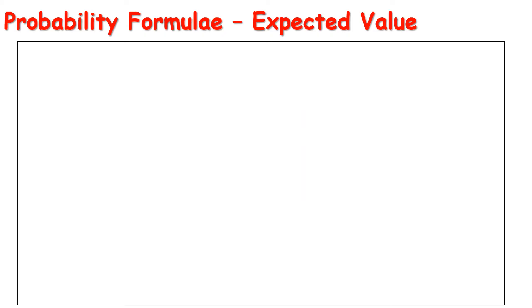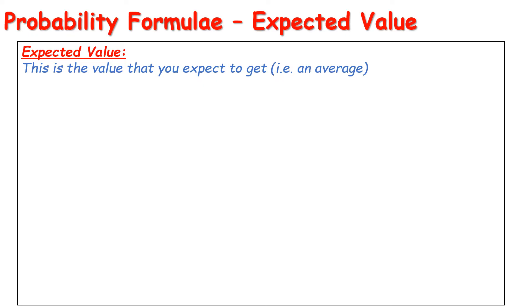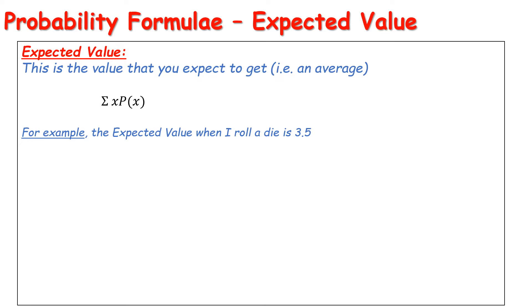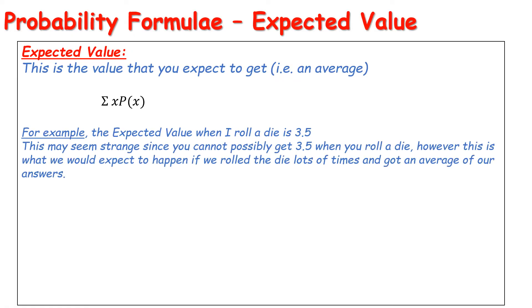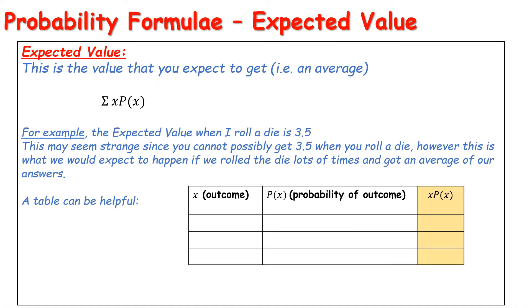Let's talk about expected value. Expected value is the value you expect to get — it's essentially an average or a mean. The formula is the sum of X times the probability of X. For example, the expected value of rolling a dice is 3.5, which seems strange because you will never actually roll 3.5. However, if you were to roll the die thousands of times, the average of all results should be 3.5, because each number 1 through 6 should come up roughly the same number of times on a fair die. A table is very helpful here: X is the outcome, P(X) is the probability of that outcome, and then we have X times P(X).